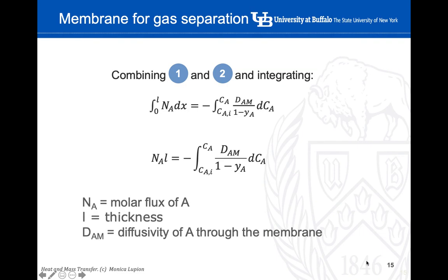If we combine equation one and equation two, and integrate between the limits of the membrane thickness — from zero to L, L being the thickness — this must equal the integration along the concentration variation of element A of diffusivity over (1 minus Y_A) times concentration. Solving the left side, the molar flux of A times the thickness equals minus this integration term on the right side of the equation.